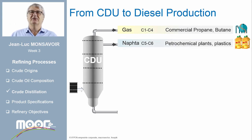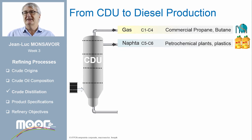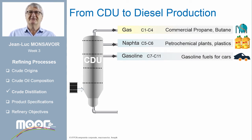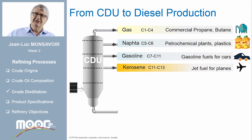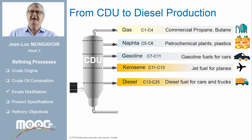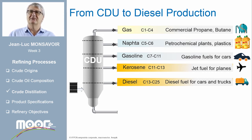Then we have the naphtha cut, with a carbon number range between 5 and 6 — the raw material used in the petrochemical industry to produce different types of plastics. Next, the gasoline cut, composed of hydrocarbons with 7 to 11 carbon numbers, is the base for gasoline fuels used for spark ignition engines. The kerosene cut, with carbon numbers between 11 and 13, is the main base used to produce jet fuel Jet A1, delivered to all international airports. The diesel cut, with hydrocarbon chains containing 13 to 25 carbon numbers, is the base for diesel engines of cars and trucks, and also the base for heating oil used to heat buildings, houses and offices.